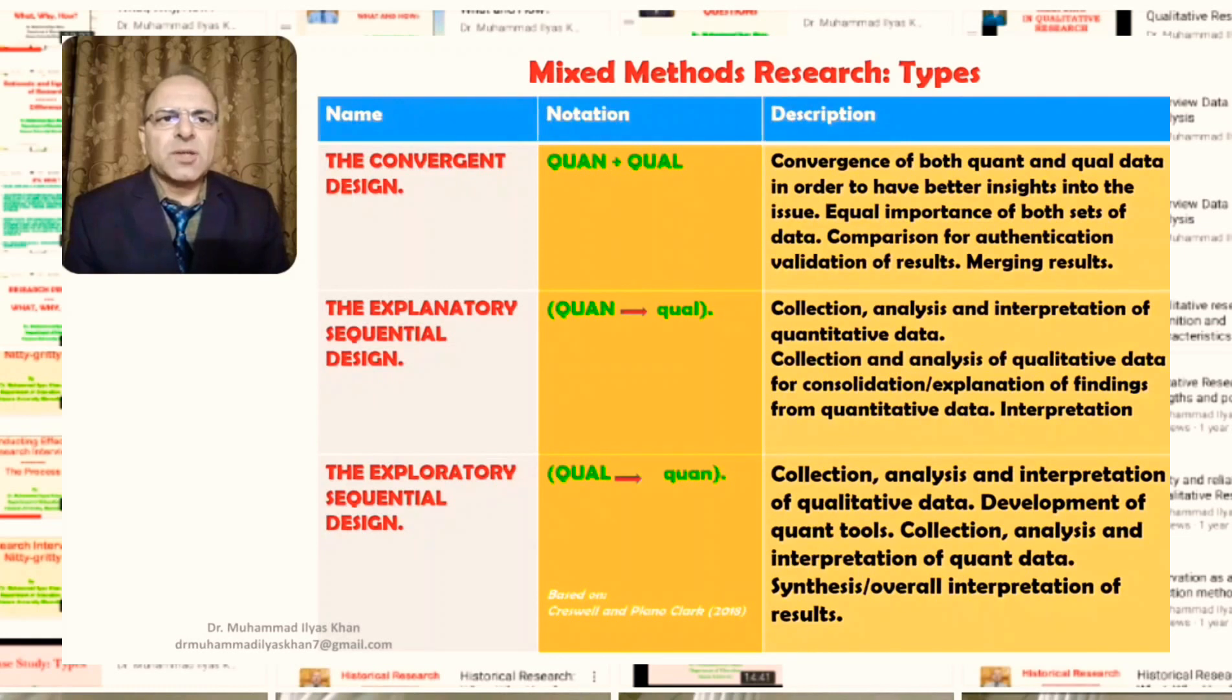the qualitative data collection and analysis. The aim of this is actually to consolidate or explain the findings that have come through our main research part, which is the quantitative part. Then, there is an interpretation of the main quantitative findings in the light of our findings from the qualitative part. The last one, the third typology, the exploratory sequential design,